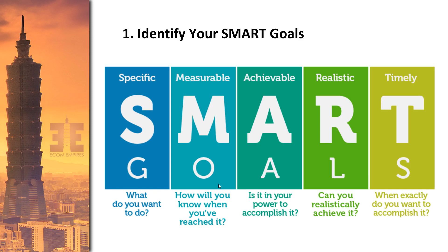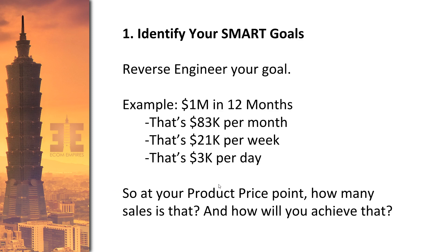Timely means putting an actual time measurement on it — one year, one month, four months, five weeks, whatever it is. This is powerful because you can reverse engineer your goal and break it down into pieces. For example, if your goal is to make a million dollars in sales in 12 months, reverse engineering that gives you $83,000 per month, which breaks down to $21,000 per week, which breaks down to about $3,000 per day. That's the average you need to be achieving to do a million dollars in 12 months.